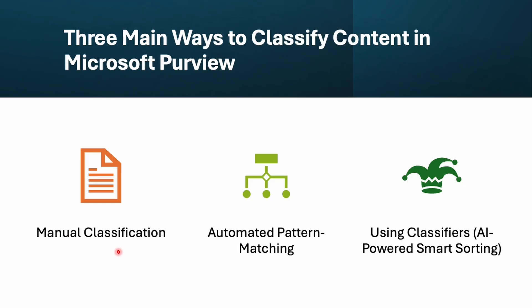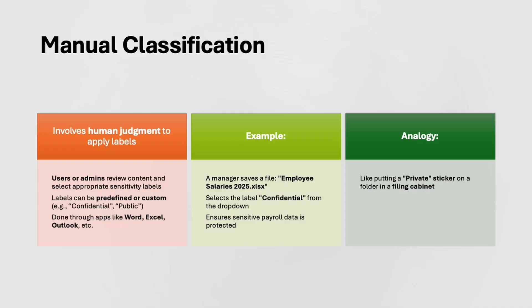There are three main ways to classify content in Microsoft Purview. The first is manual classification, the second is automated pattern matching, and the third — which is the smartest one — is the custom trainable classifier. Using the classifier approach, we can use an AI-powered smart way to classify our data. Let's explore them one by one.